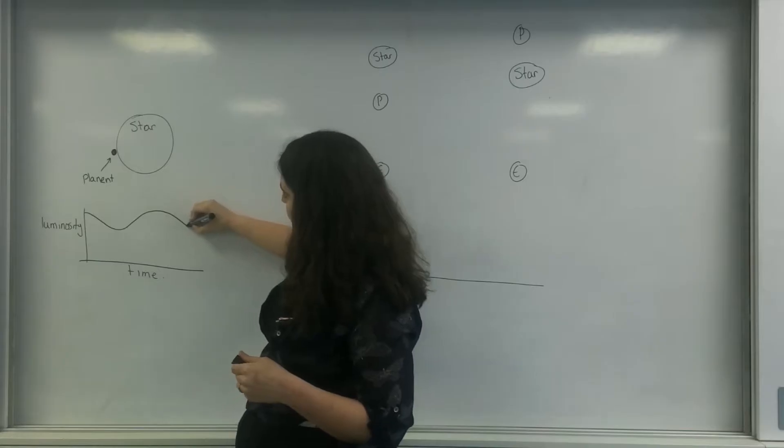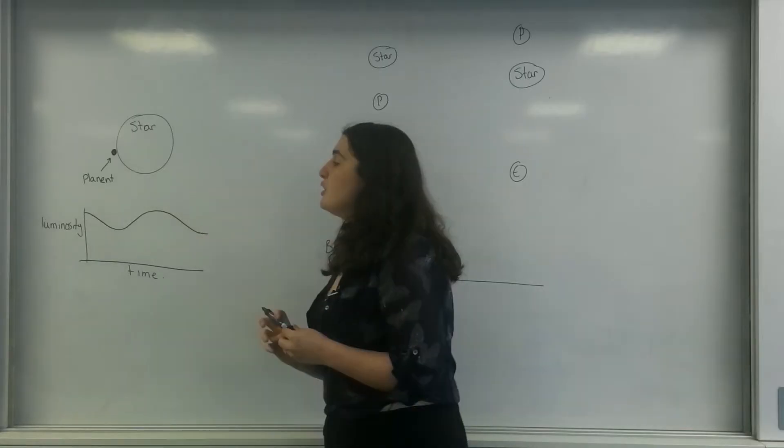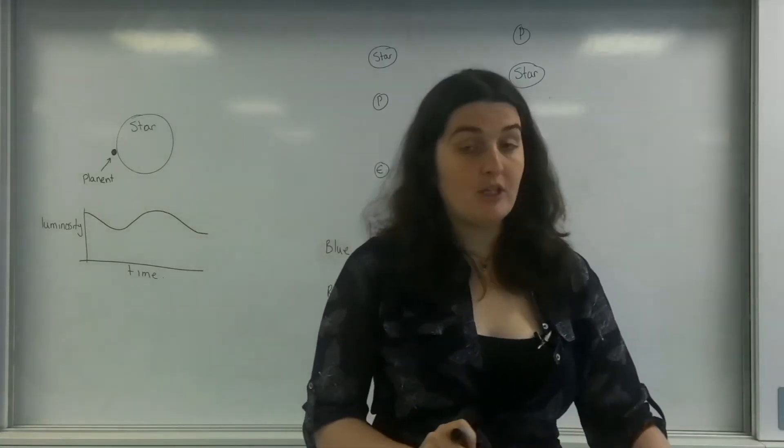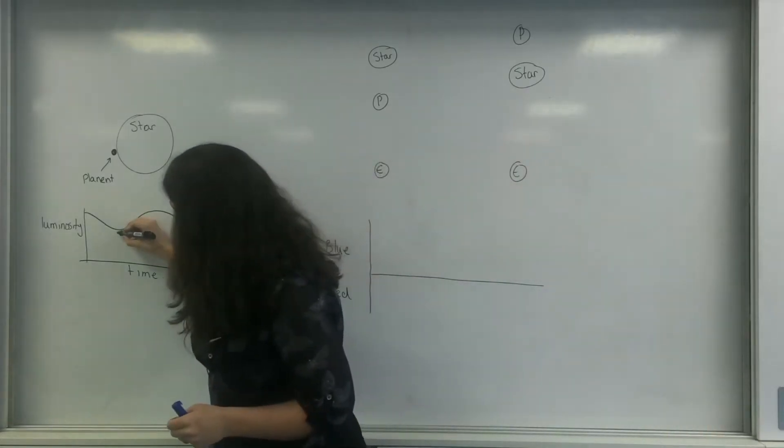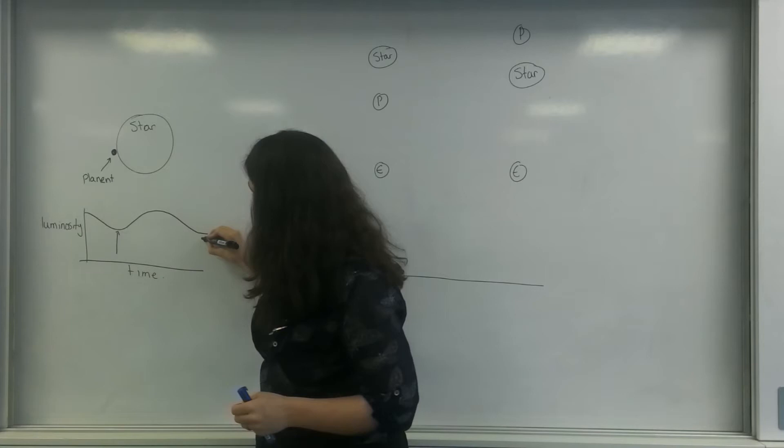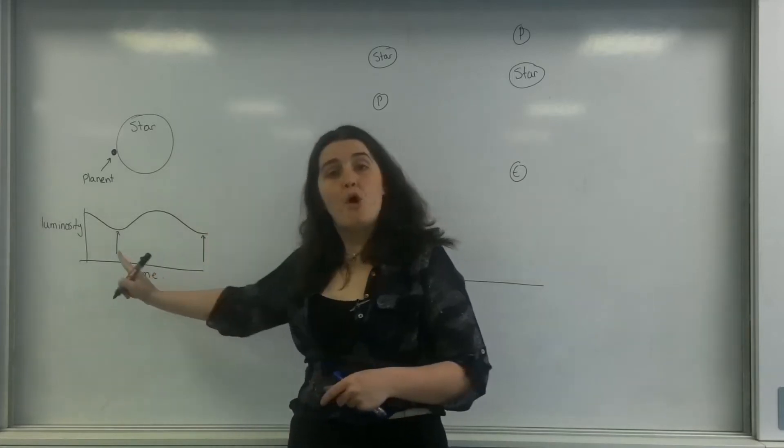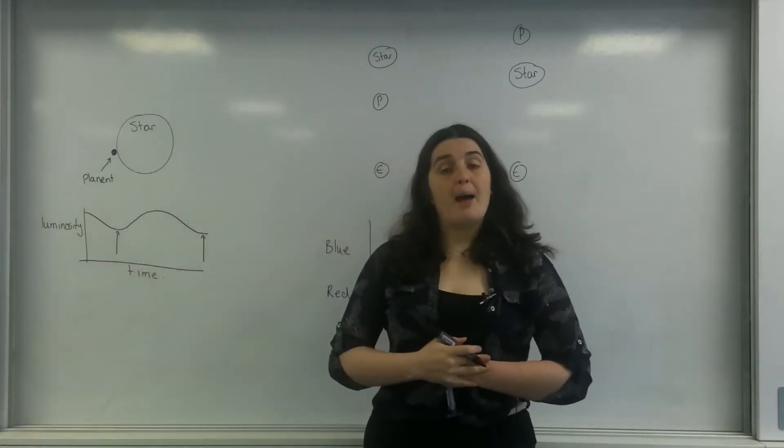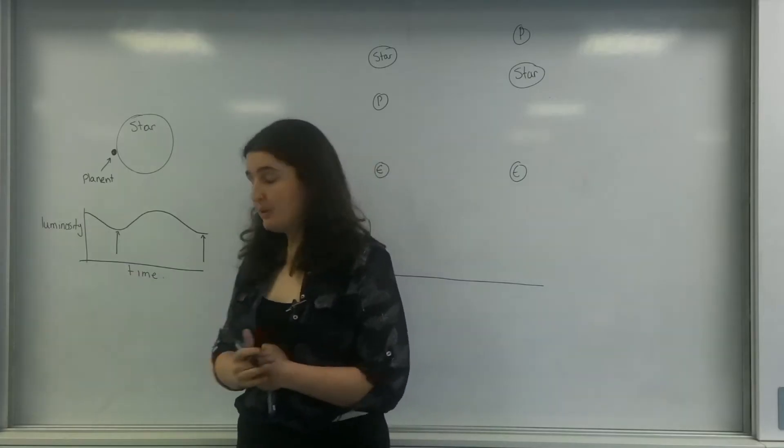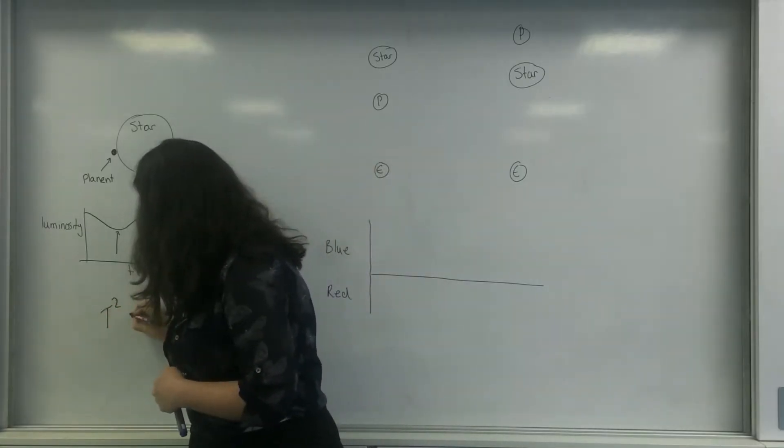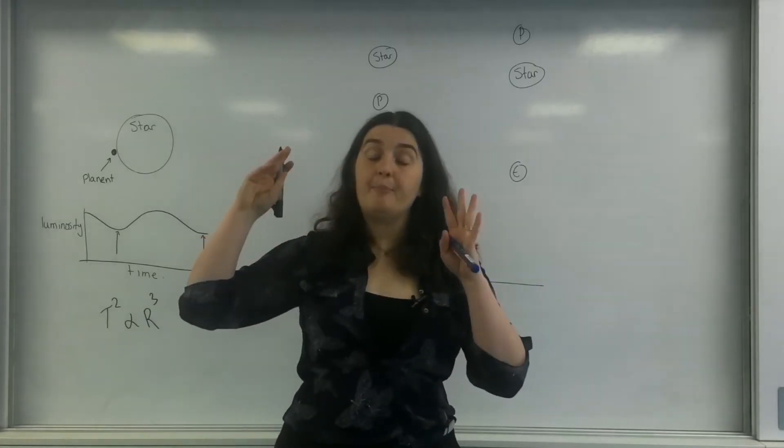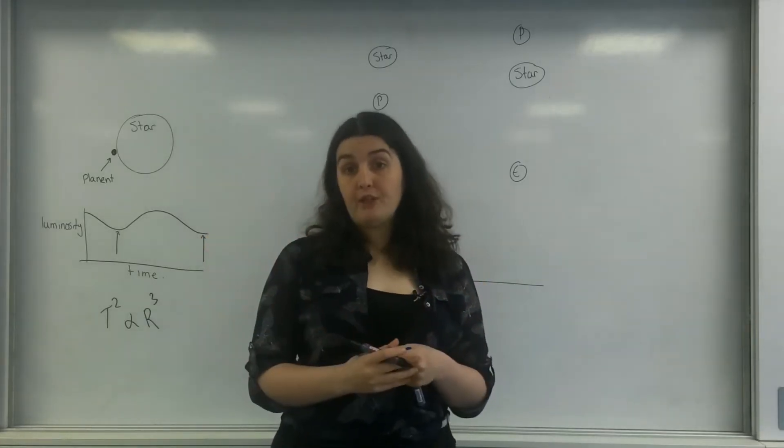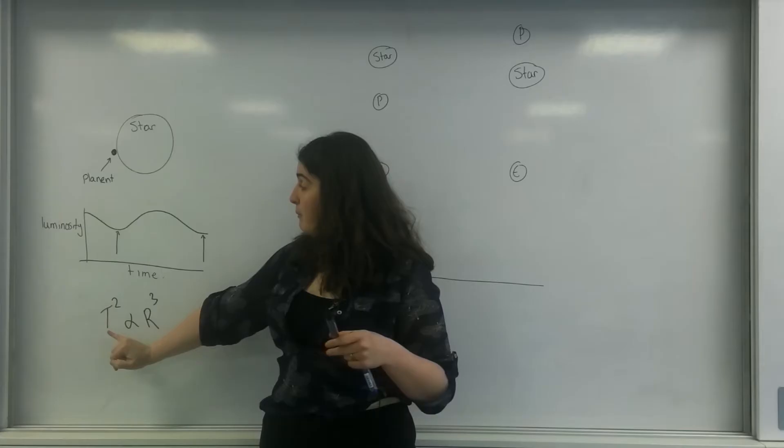And of course it would come back again. So what I can actually do from this information is work out the time period it takes for one orbit of that planet. And using Kepler's laws that t squared is proportional to the radius cubed, which you've learned in gravitational fields, because I know the time period of the orbit I could then work out the gravitational...